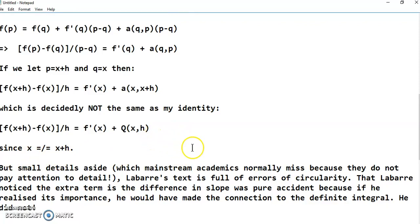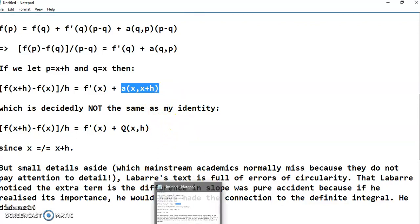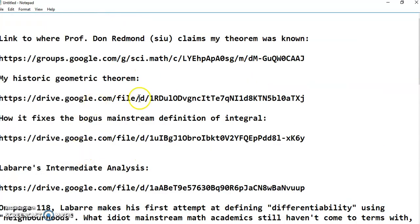The problem is that he just saw this relationship, that a(x,x+h) is the slope difference. But he didn't prove it, first of all geometrically, as I did in my historic geometric theorem, to which the link is over here.